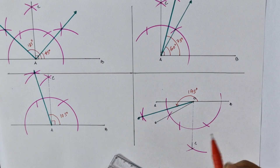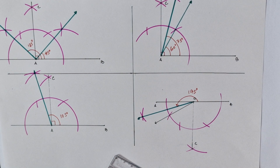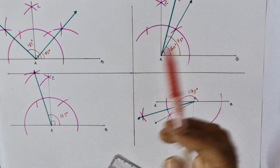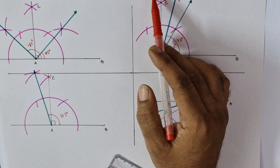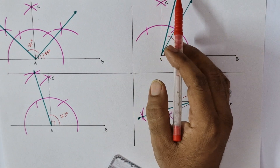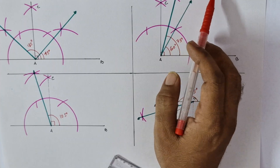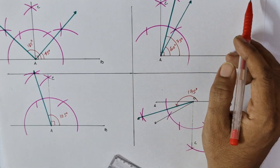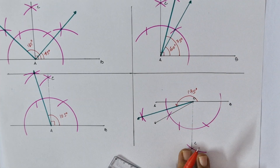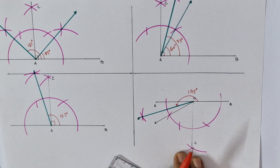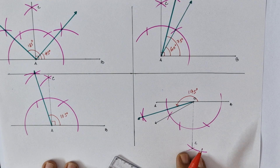So we have seen that without using a protractor, just using a ruler and compass, we have drawn 45 degrees, 75 degrees, 90 degrees, 105 degrees, 135 degrees, and 195 degrees. That's all for today students — see you in the next lecture, thanks for watching, bye bye.